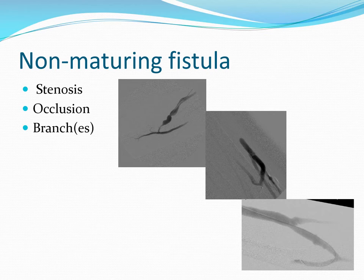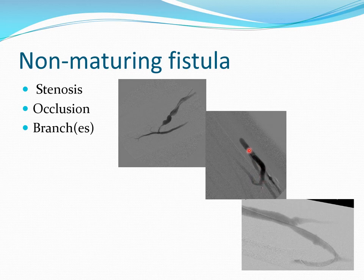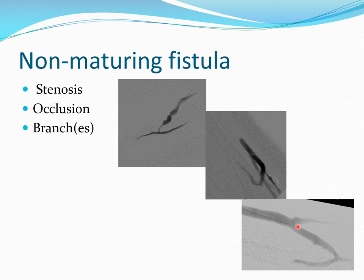In non-maturing fistulas, the reasons behind non-maturation are stenosis, occlusion, and the presence of branches. Stenosis — here you can see the artery, anastomosis, and the vein with a high-grade stenosis in the juxta-anastomotic region. The next reason is occlusion — in this example, following the fistula, you can see it is completely occluded where normally this vein should extend. The next common cause is branches — in the presence of branches, they can take blood away from the fistula body, resulting in lack of maturation.